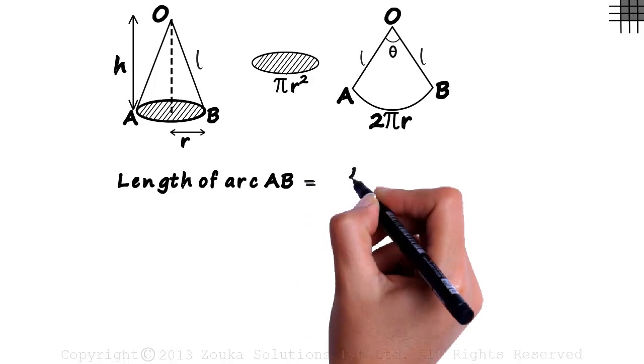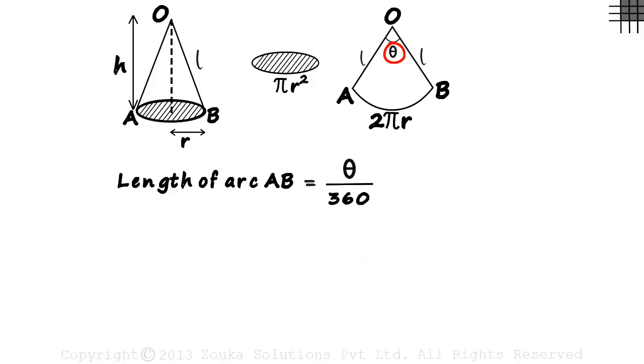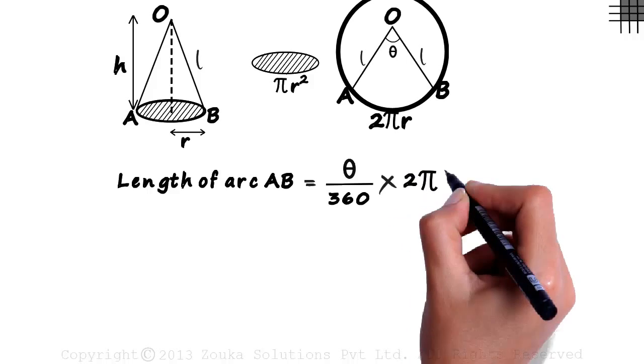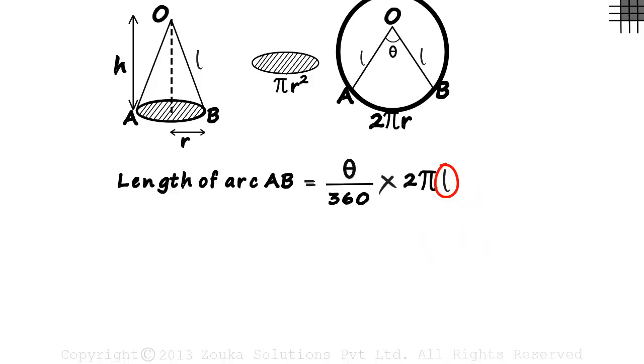It will equal theta by 360 multiplied by the circumference of the circle with radius O, A and O, B. What will be the circumference of the circle that is formed with this as the sector? It will be 2 pi L since L is the radius of the circle of which this sector is a part.